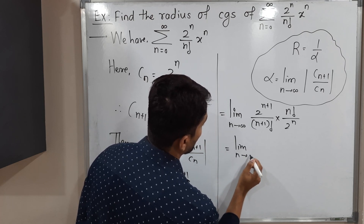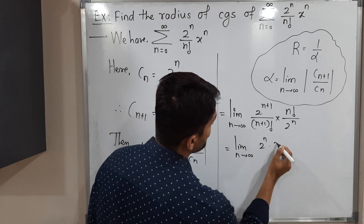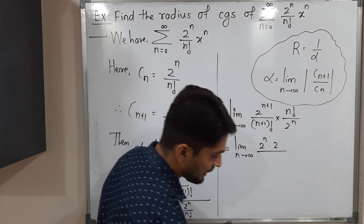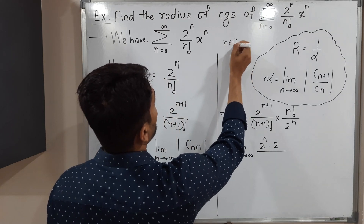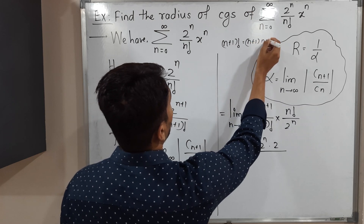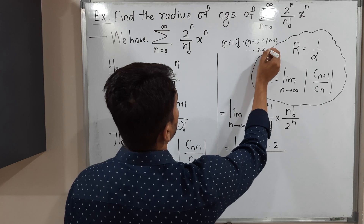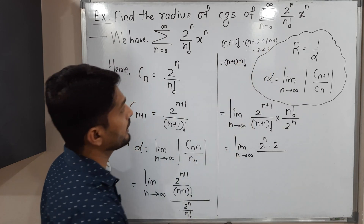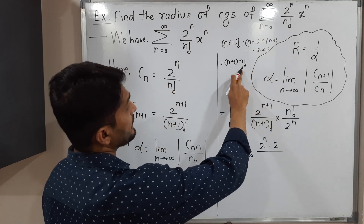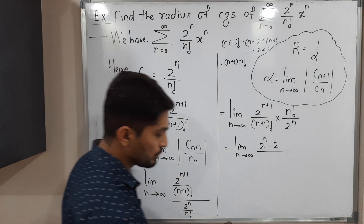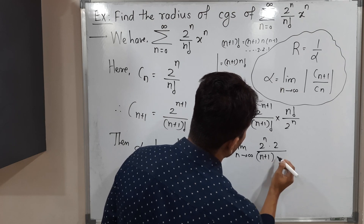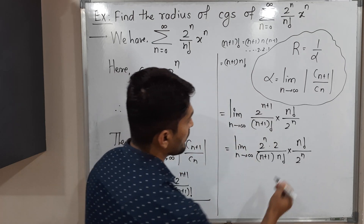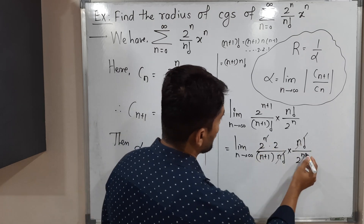This equals the limit as n tends to infinity of 2^{n+1} — which is 2ⁿ times 2 — over (n+1)! times n! over 2ⁿ. Now, (n+1)! can be written as (n+1) times n!. So we have 2ⁿ times 2 times n! divided by (n+1) times n! times 2ⁿ. The n! cancels with n! and 2ⁿ cancels with 2ⁿ.